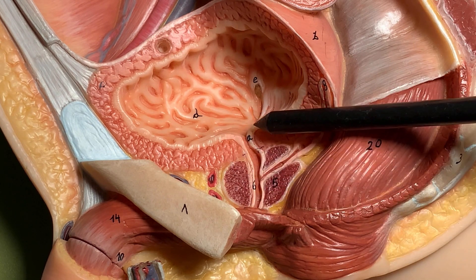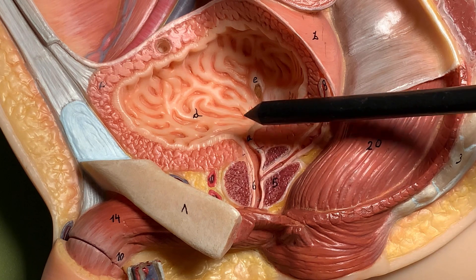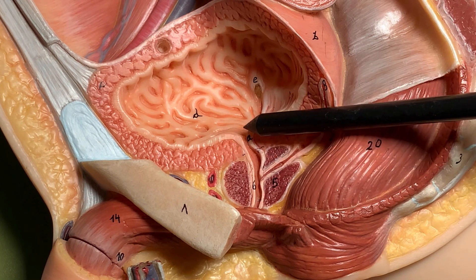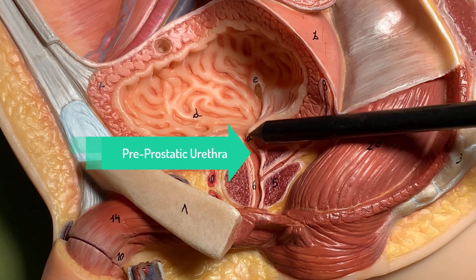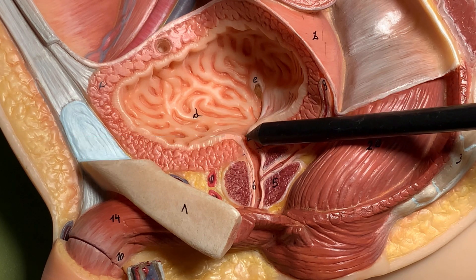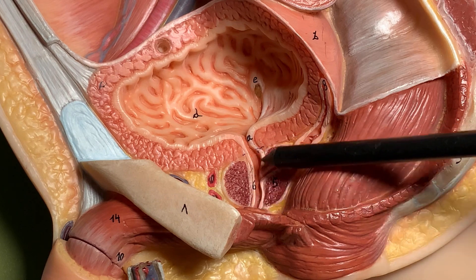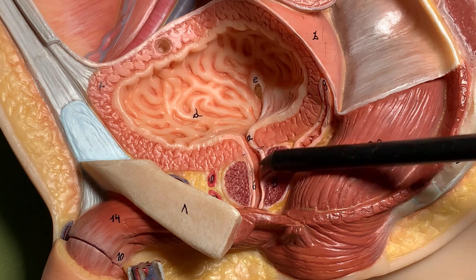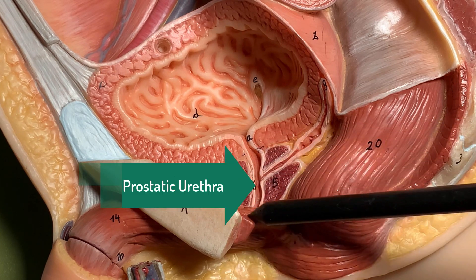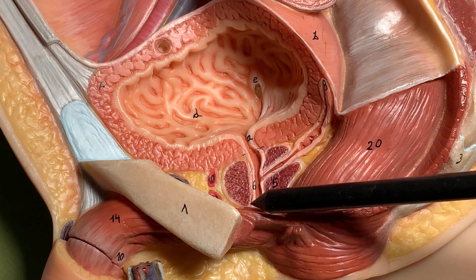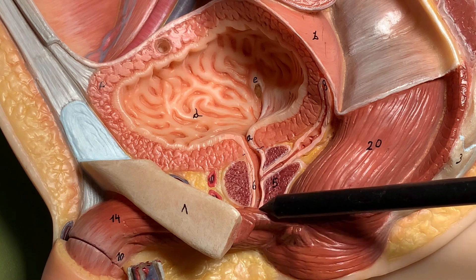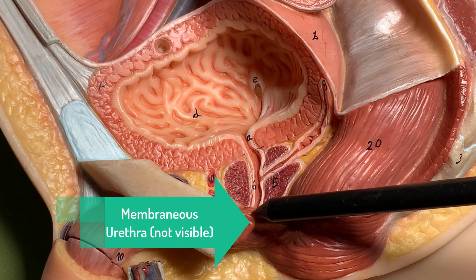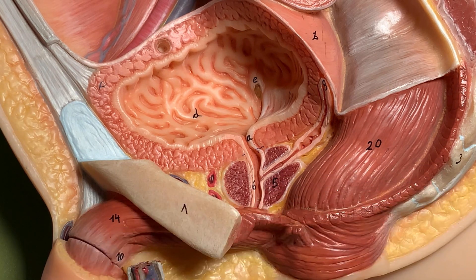The urethra has various parts. In broad terms, we categorize it starting with the pre-prostatic urethra, which is close to the bladder neck. When it passes through the prostate gland we call it the prostatic urethra. Then it passes through a muscle layer and that part traversing through the muscle layer is the membranous urethra. Further along it is called the spongy urethra.